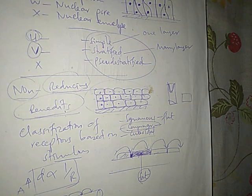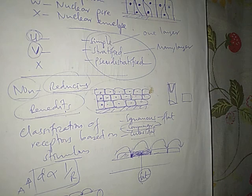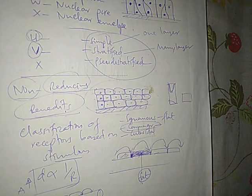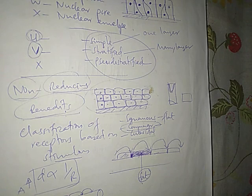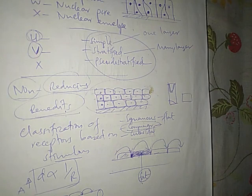Why is it advantageous for the ileum to have a large surface area? Give two reasons. First, most of the end products of digestion are digested and absorbed in the ileum, so a small surface area to volume ratio would mean a large amount of undigested food would pass out. The two advantages are: digestion and absorption.